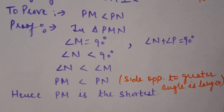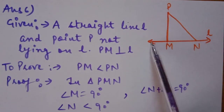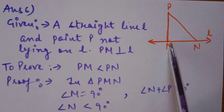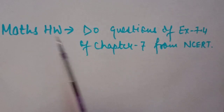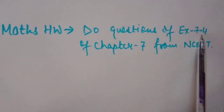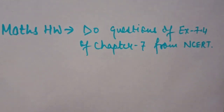We have proved that the perpendicular from a given point not on a line is the shortest distance. With this, Exercise 7.4 is finished. Homework: complete two questions from Exercise 7.4, Chapter 7 in your homework notebook, and revise the theorems. If you have any doubts or confusion, please mention them in the comment section. Thank you, have a nice day.